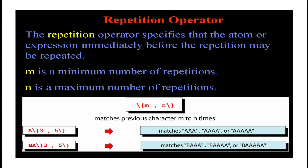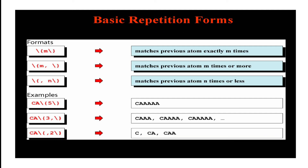In the example 'ba\{3,5\}', 'b' remains constant but the atom immediately before the repetition operator — that is 'a' — has to be repeated. So 'a' must be repeated a minimum of three times and a maximum of five times. 'b' appears only once, but it must be followed by 'a' repeated three, four, or five times — not beyond that. This is what the repetition operator does.